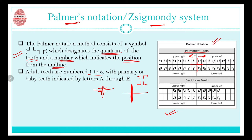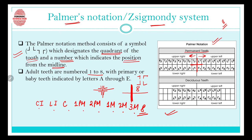For primary teeth in the Palmer system, alphabets are used instead of numbers, going A, B, C, D, E in each quadrant. There are eight teeth in each quadrant for permanent dentition: central incisors, lateral incisors, canines, first premolars, second premolars, first molar, second molar, and third molar. However, for deciduous or primary teeth there are only five teeth per quadrant — central incisors, lateral incisors, canines, first molar, and second molar, with no premolars.